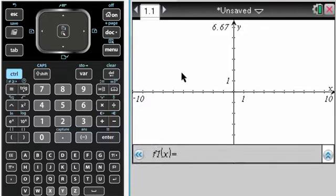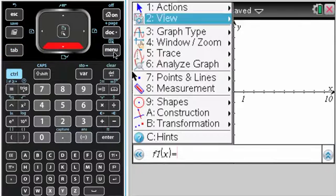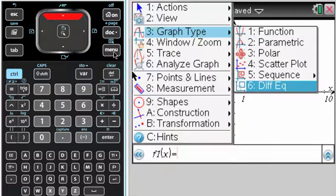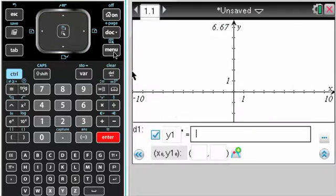I'm going to try to show you how to use the calculator for Euler's method. So the first thing that we want to do is press menu. So I'm in the graphing window. And then menu, graph type, differential equation.